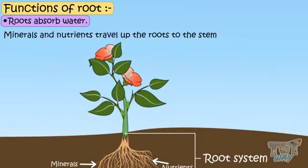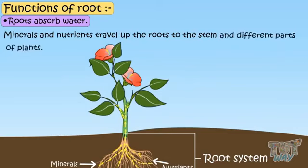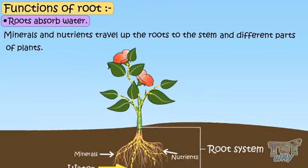Minerals and nutrients travel up the roots to the stem and different parts of plants to provide nutrition to all parts of the plant.